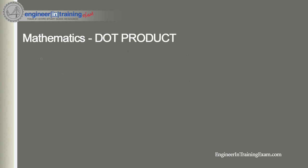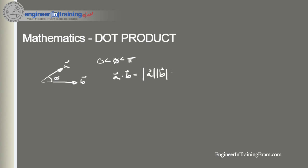The dot product can also be geometrically interpreted. Say we have two vectors a and b with a specific angle theta between them. Assuming theta is somewhere between zero and pi, the dot product can be written as: a dot b equals the magnitude of a, times the magnitude of b, times cosine of theta. This is the geometric representation of the dot product.